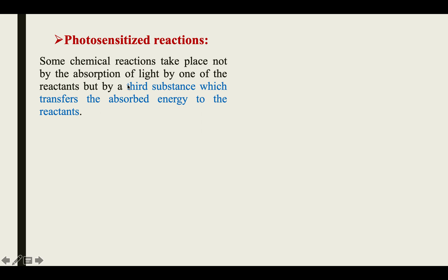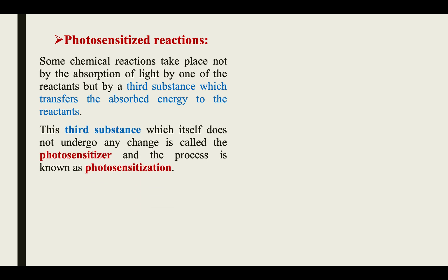The photosensitizer acts as an intermediate carrier, carrying energy from the source to the reactant — that is why it is called a third substance. The reactants A and B do not participate directly in the absorption of light. This third substance, which itself does not undergo any changes, is called the photosensitizer.